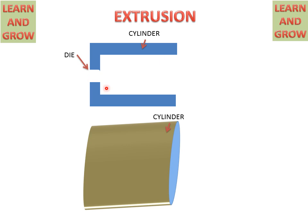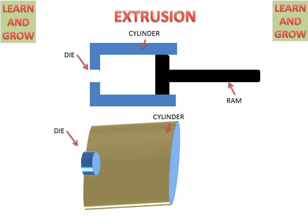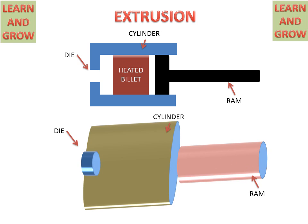This is the die opening. This die is the shape of the required product, and there is the die in the cylinder. The RAM is for forcing the heated billet in the cylinder — this is the RAM. This is the heated billet which will convert into the final product.